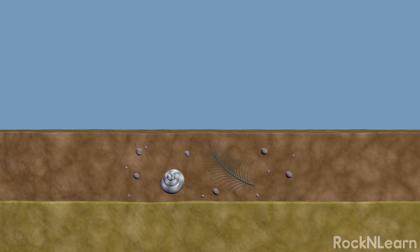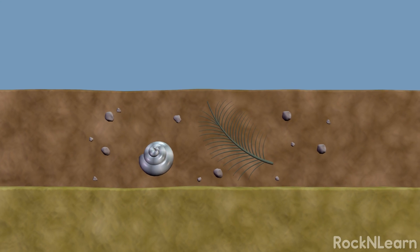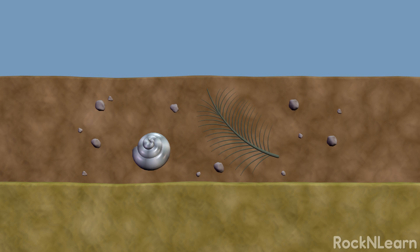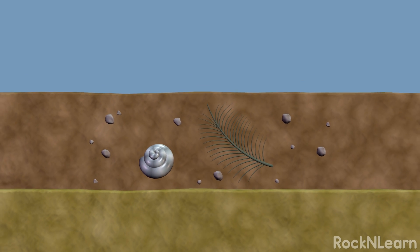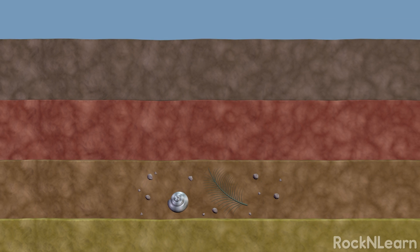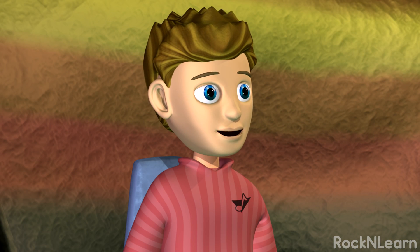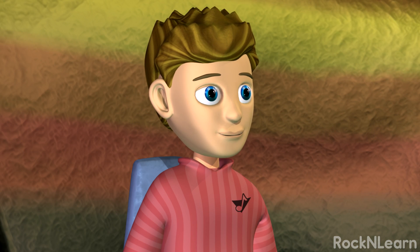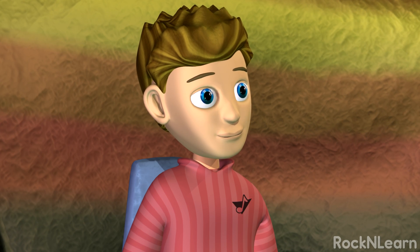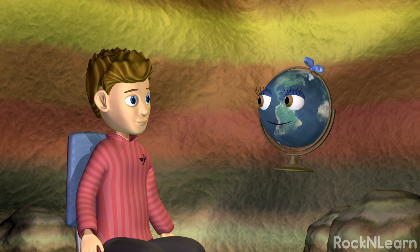Fossils found in the same layer of sedimentary rock are from things that lived around the same time. As new layers form on top, the fossils get buried deeper and deeper. So the deeper the fossils are found, the older they are? You've got it!